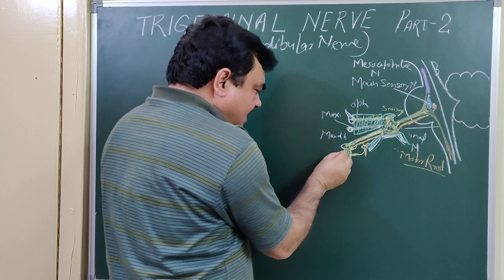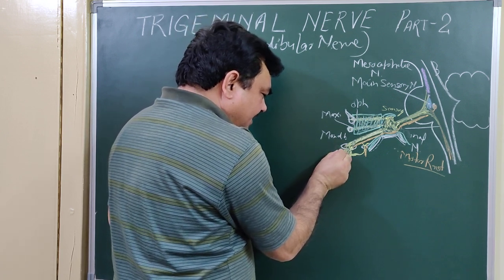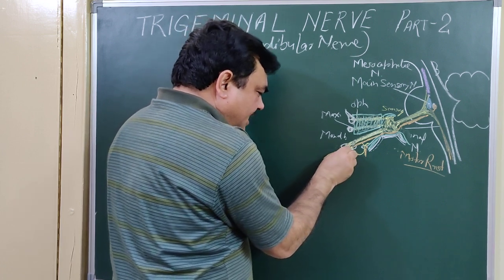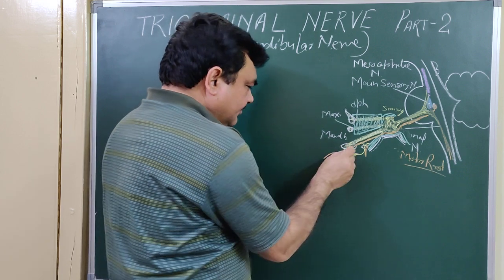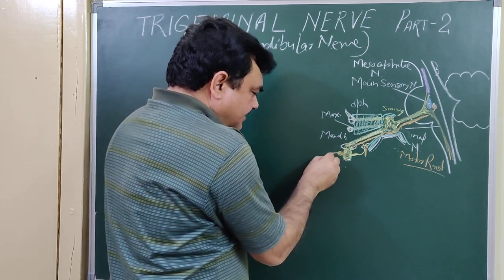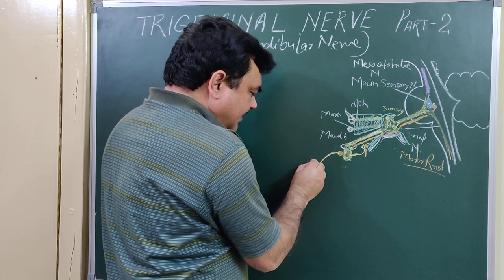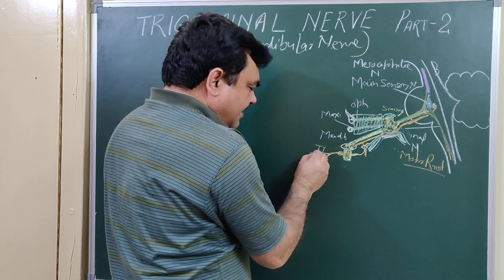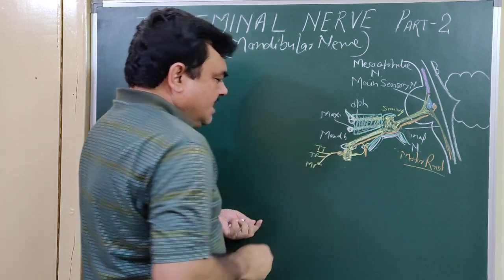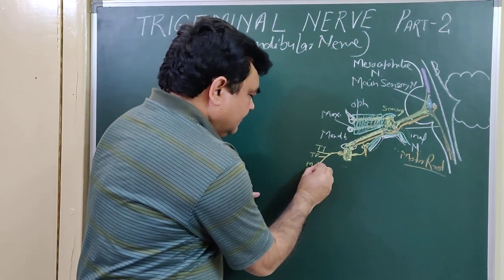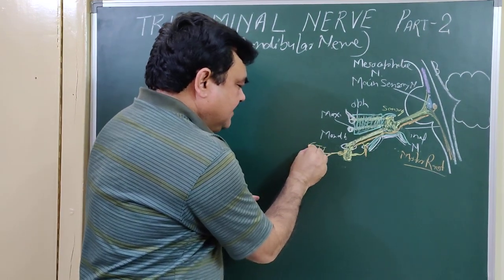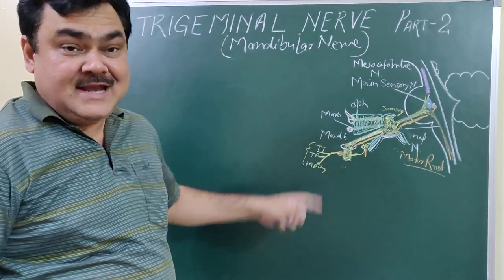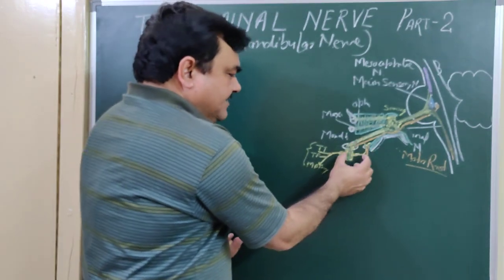The second branch from the main trunk is the nerve to medial pterygoid. It passes through the otic ganglion, which is located on the medial side. The nerve to medial pterygoid gives three branches: to the medial pterygoid, tensor tympani, and tensor palatine.